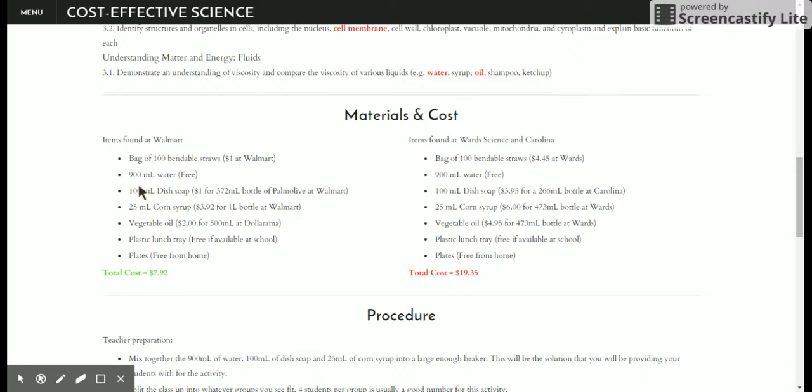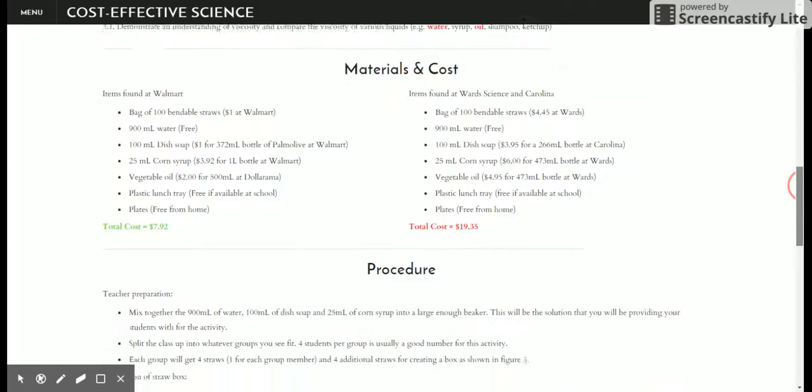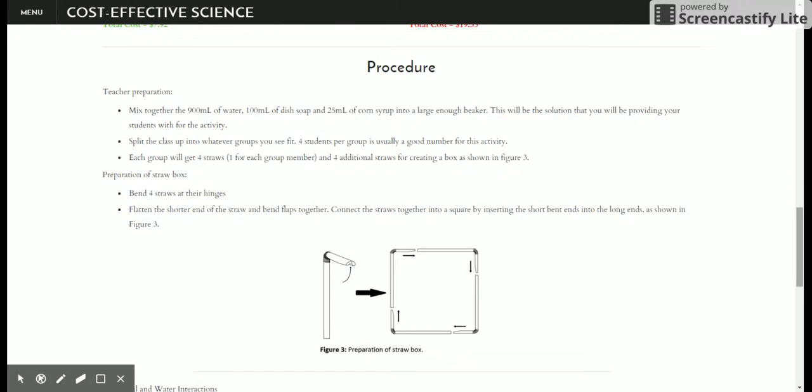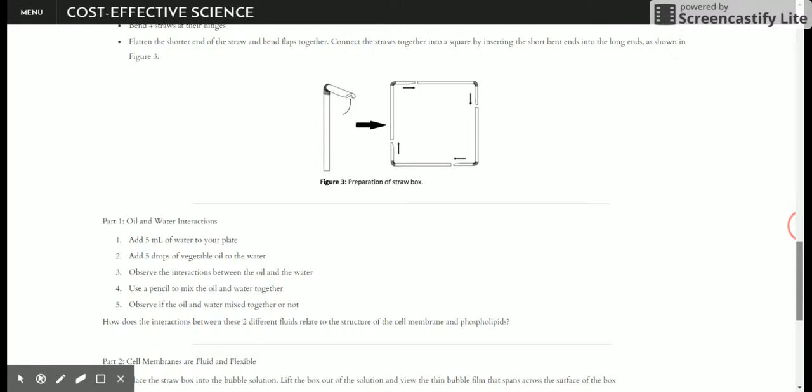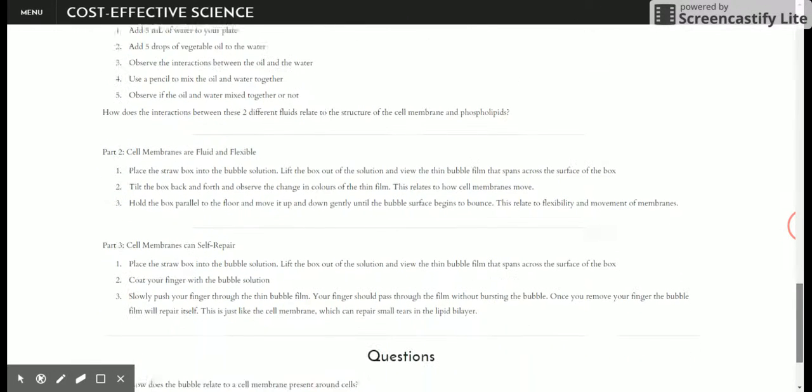At the end of each of my materials list, I have the total cost for each, and it shows the difference that the amount that you're saving. This may not seem like a lot, but if you're saving say $8 per class, per year, per teacher, that's quite a lot of money that you're saving in the end. If we keep scrolling down, you can see the procedure for each of these lab activities. I go into quite depth for the procedure of each activity.